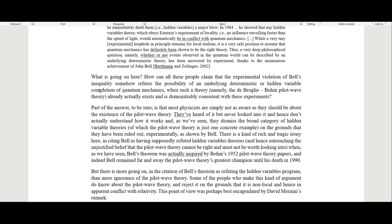Norsen goes on to say: What is going on here? How can all these people claim that the experimental violation of Bell's inequality somehow refutes the possibility of an underlying deterministic or hidden variable completion of quantum mechanics, when such a theory, namely the de Broglie-Bohm pilot wave theory, already actually exists and is demonstrably consistent with these experiments? Part of the answer is that most physicists are simply not as aware as they should be about the existence of the pilot wave theory. They've heard of it but never looked into it.